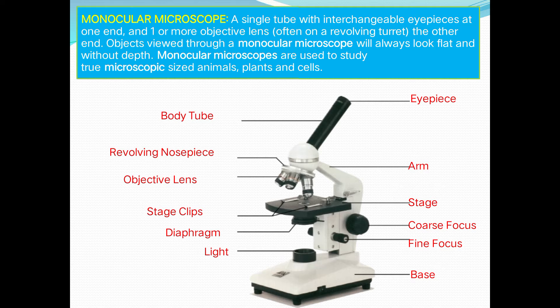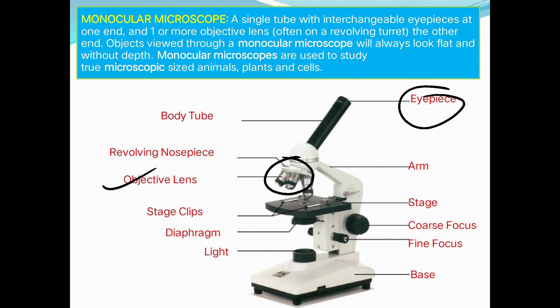The most commonly used type is the monocular microscope — a single tube with an interchangeable eyepiece at one end and one or more objective lenses on a revolving turret at the other end. Objects viewed through a monocular microscope always appear flat and without depth. Monocular microscopes are used to study microscopic-sized animals, plants, and cells.